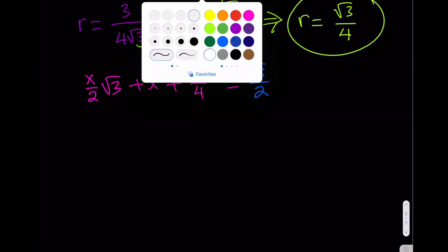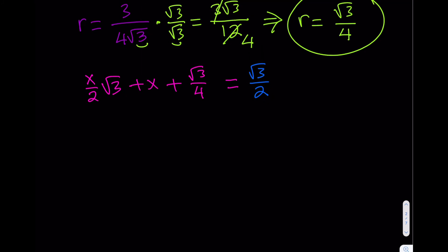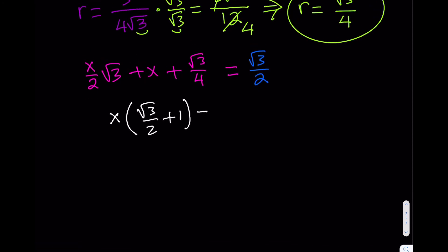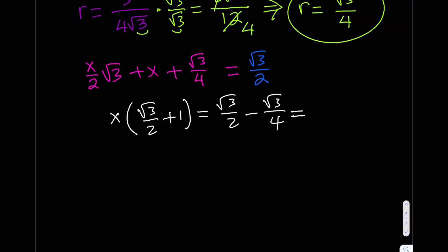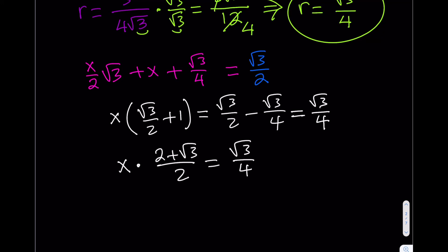So let's continue with basic math — no more quadratics, no more Pythagorean, just basic math. I can take out an X, which should give me X times the quantity root three over two plus 1. And then square root of three over four is just half of square root of three over two. So if you subtract half a number from that number, you end up with the same half. Arranging with a common denominator: X times the quantity 2 plus root three over 2 equals square root of three over 4.